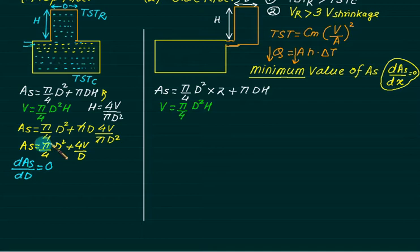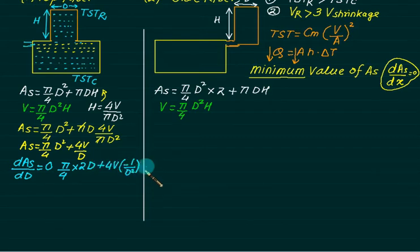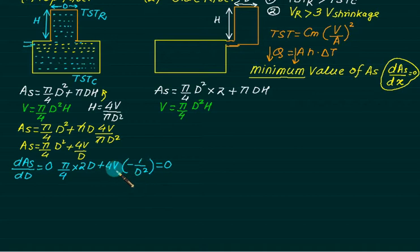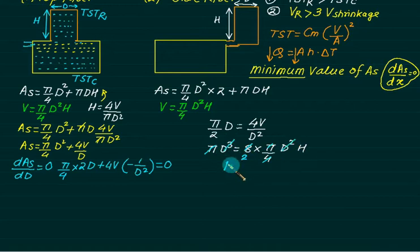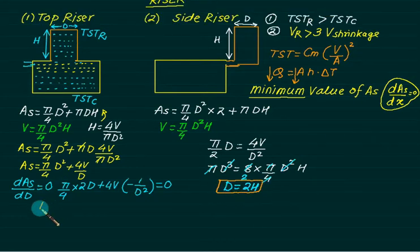Solving the equation: (π/2)D = 4V/D², so πD³/2 = 4V. Substituting V = (π/4)D²H: πD³/2 = 4 × (π/4)D²H = πD²H. Cancelling π and one D², we get D/2 = H, or equivalently D = 2H. So the condition for the top riser is D = 2H. Remember this equation — it is always asked.